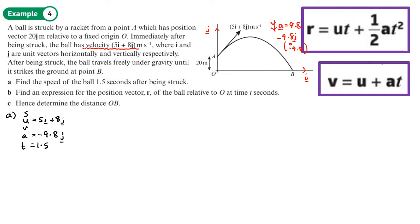We want to find the speed after 1.5 seconds, so we're trying to find v. We have u, v, a, and t, so v equals u plus at. That seems to come up a lot in these vector questions: v equals u plus at, and s equals ut plus half at squared.